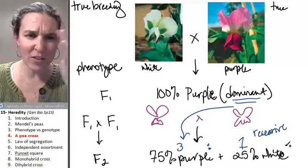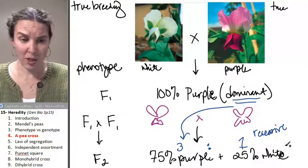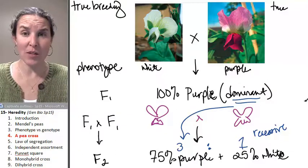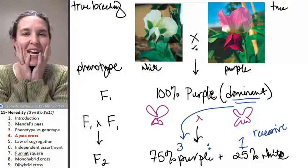And hopefully, you're thinking, like, how is this possible? I'm going to draw you a picture of how he came up with these results when we get to the Punnett square section.